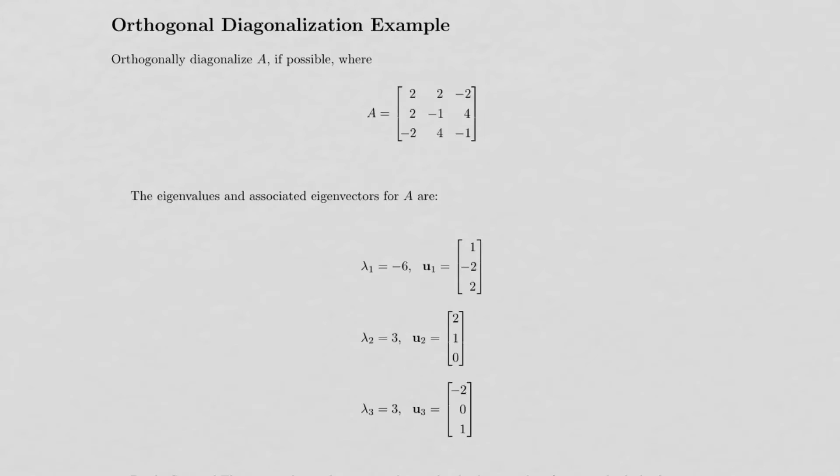So we'll see how that works. First, though, we need to check and see if A is symmetric. So remember, a symmetric matrix has the property that entries across the main diagonal are equal to each other. So for example, these two are equal, these two are equal, and these two are equal. So indeed, this matrix A is symmetric.